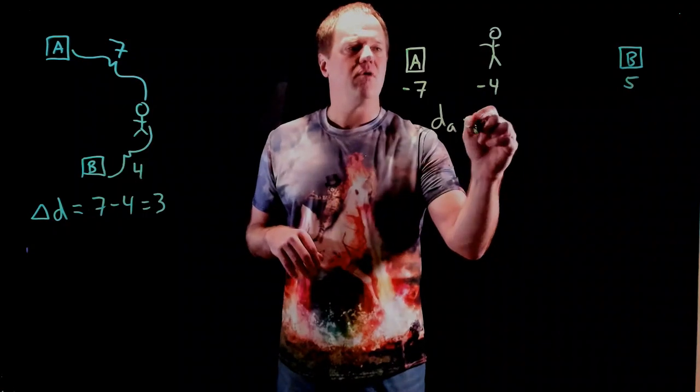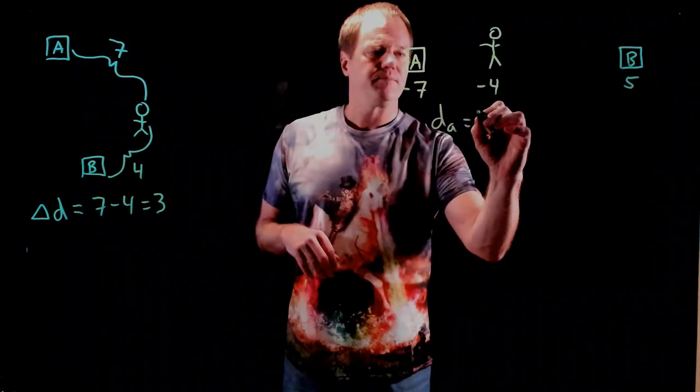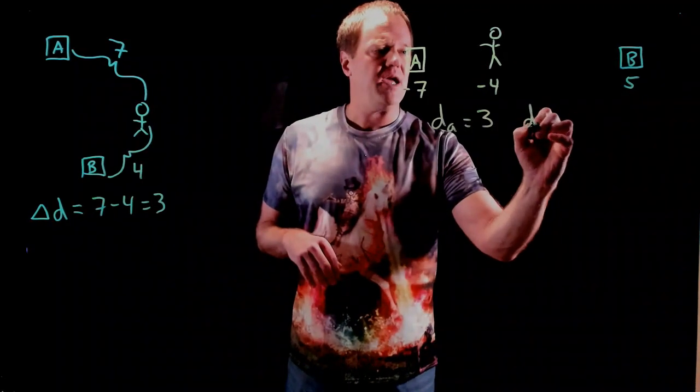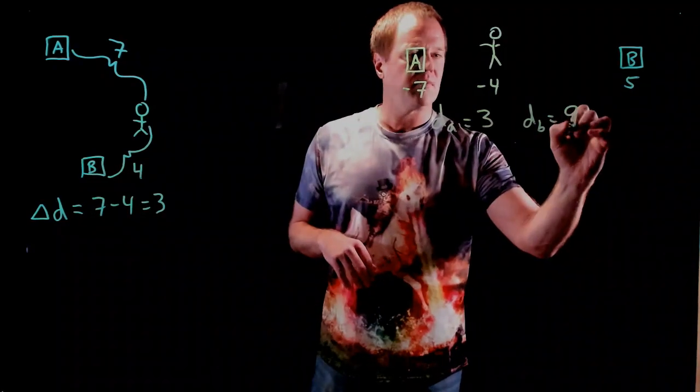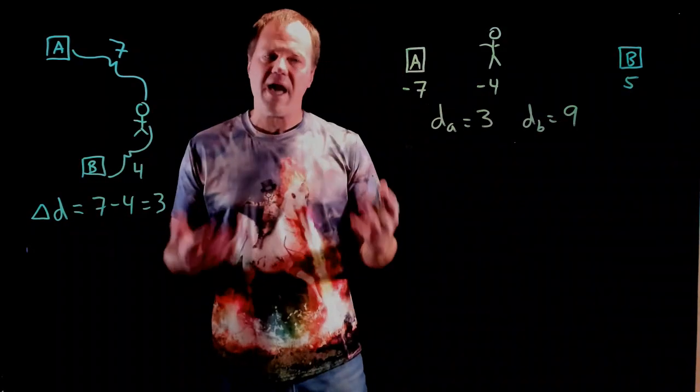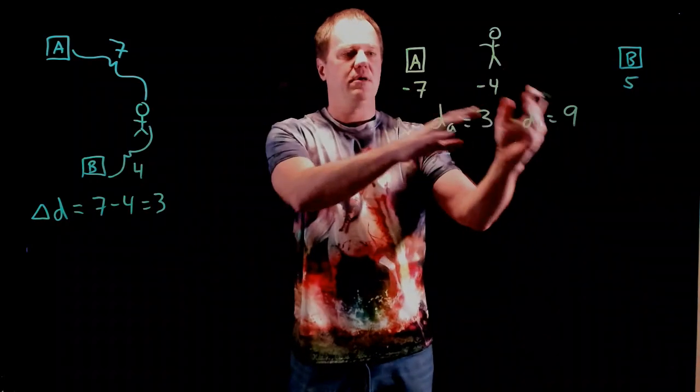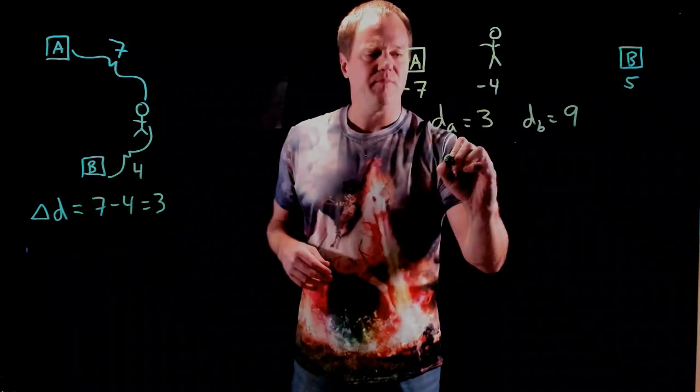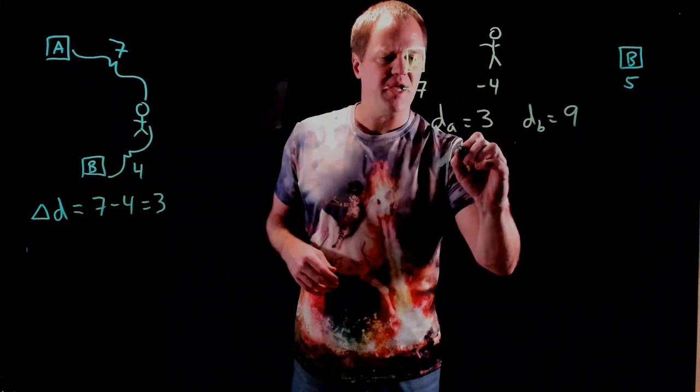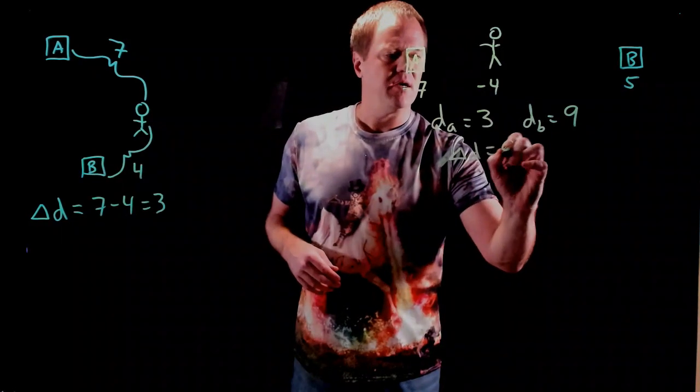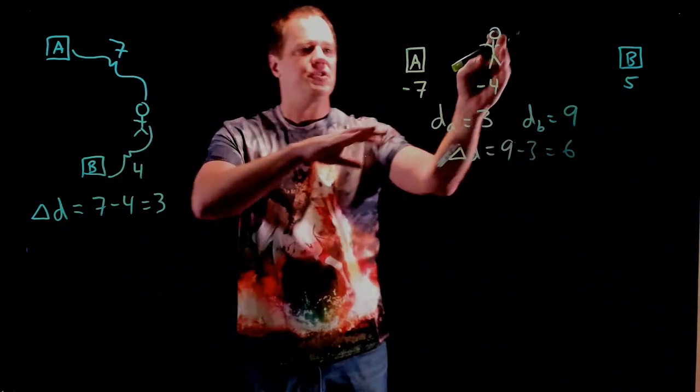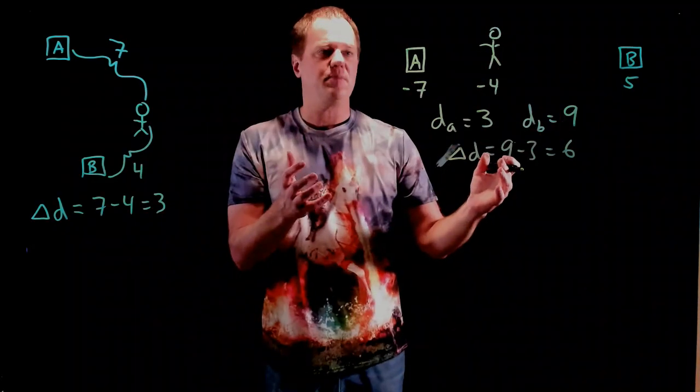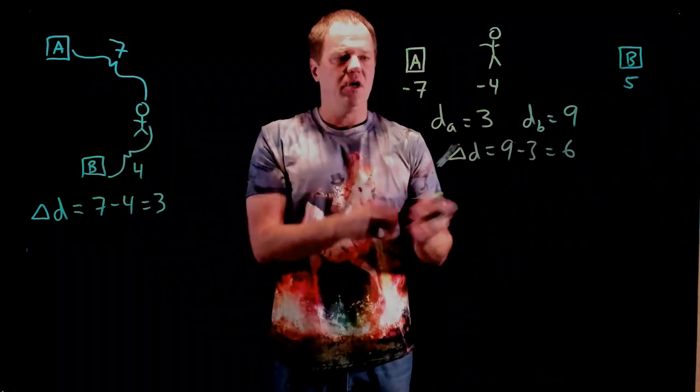So we determine the distance for each of them. Distance A will be 3 meters and distance B will be 9 meters. You should be able to do that in your head. And then the path difference, you take the bigger minus the smaller. So delta D will be 9 minus 3 or 6. That's the path difference for this particular arrangement of speakers for this particular observer.